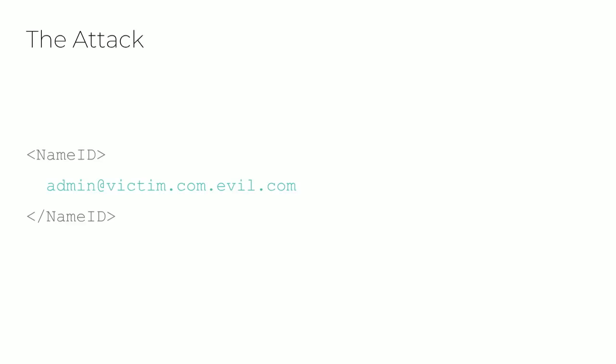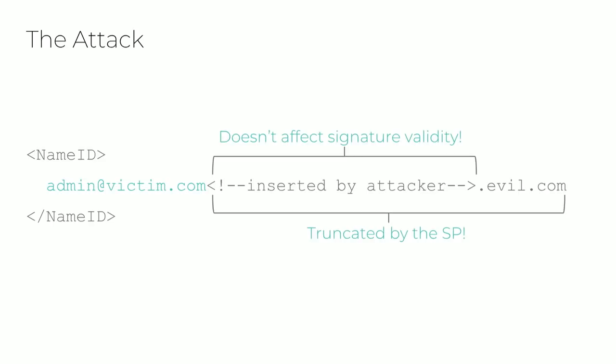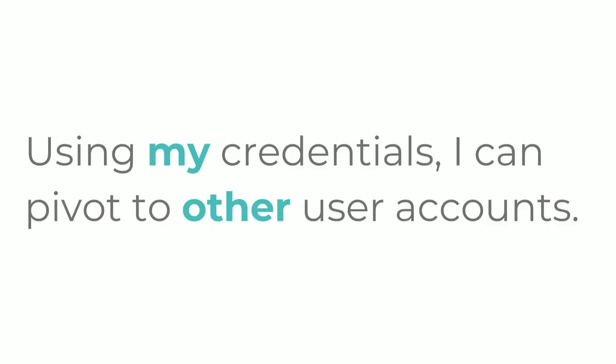The attack is simply taking a section of an XML document and inserting a comment into the appropriate location. The net result is that when processed by a vulnerable SAML SP, the comment won't invalidate the signature on that document, but would cause the subject's user identifier to become truncated. In this example, authenticating as 'admin@victim.com.evil.com' would allow an attacker to truncate their name ID to 'admin@victim.com'. The comment acts very similarly to a null-byte attack, giving the capability to truncate your own credentials to become other users.